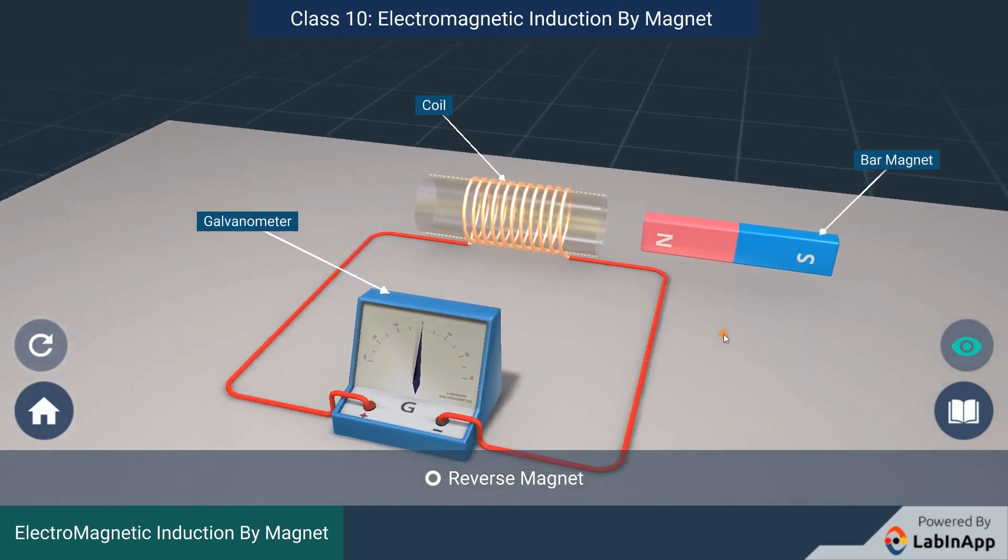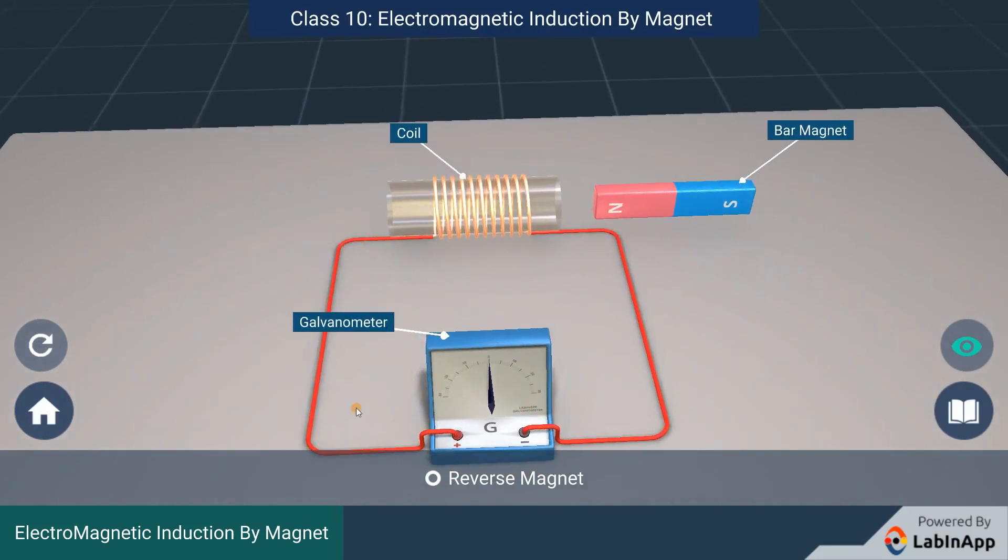The galvanometer is connected to the coil and is used to detect the current flowing in the conductor.